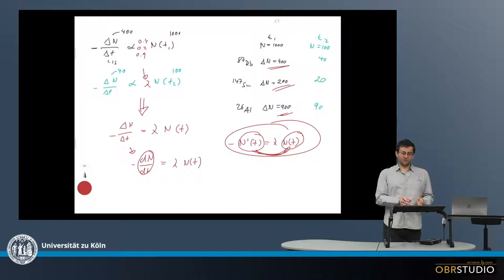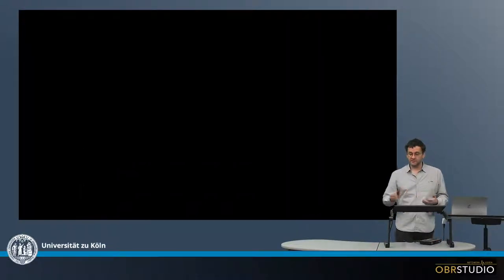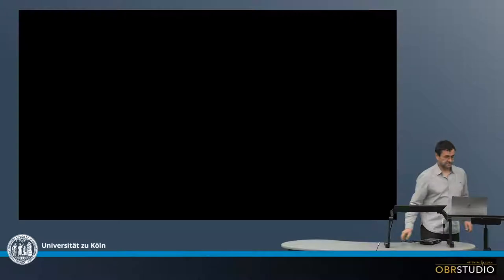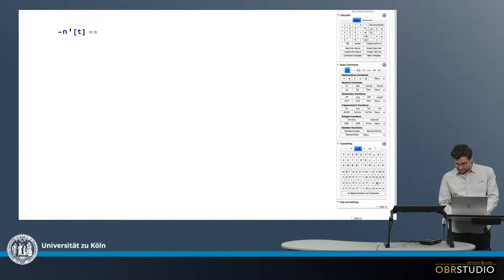And when we now solve this equation, which I will do with a math program, which makes it a little bit simpler, we will get the final decay equation. So here in this math program, I really write the equation exactly as I just derived it. So I write here minus n prime of t equals, and then lambda times n of t. So this is exactly the equation I just showed you.